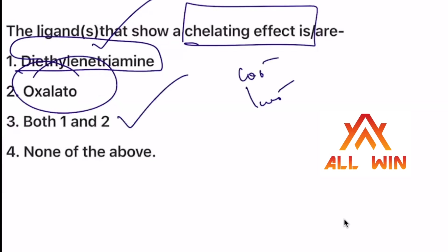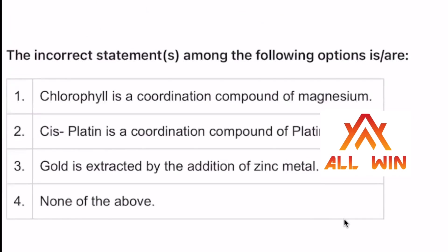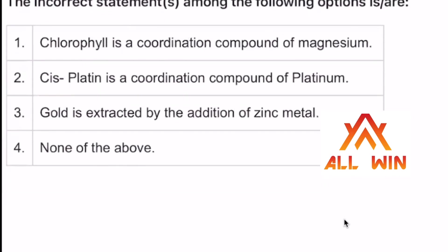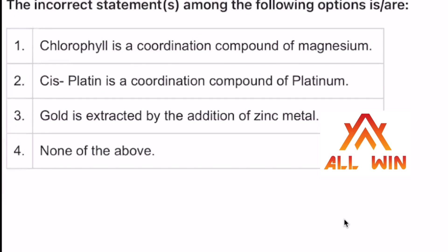Now both option 1 and 2 are out. The chelating effect is confirmed. What is the incorrect statement among the following options? We will answer. Option 2 — cis-platting coordination. This is the chelating effect. Option 2, you have to answer the question.